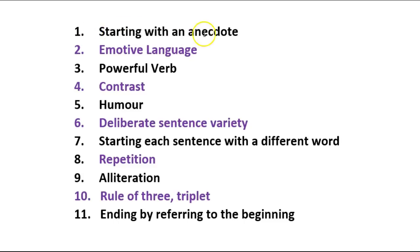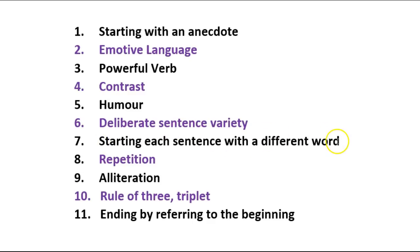You will be taught how to start with an anecdote — that's probably a new one for you, and it's probably not a technique that your teachers are teaching. You will have been told to use emotive language, and you may have been told to focus on your verbs. I think it's unlikely that your teachers emphasised contrast so much, or indeed humour. Hopefully your teachers told you about deliberate sentence variety. And then an easy mark-winner I try to teach all my students from Year 7: start each sentence with a different word. Repetition, alliteration, and the rule of three — or the triplet — you will be familiar with. But then there's the knotty problem of how to end your piece, and you do that simply by referring back to the beginning.